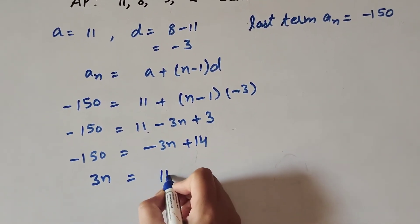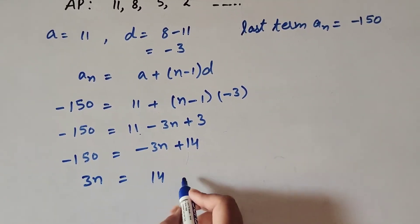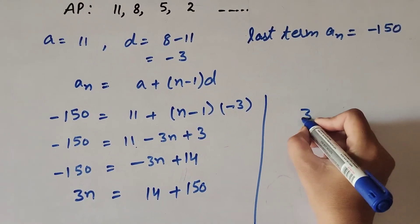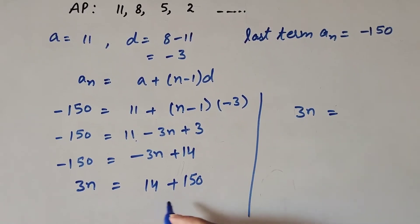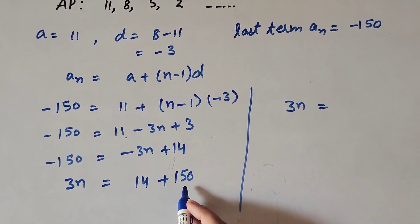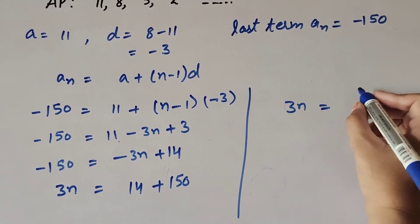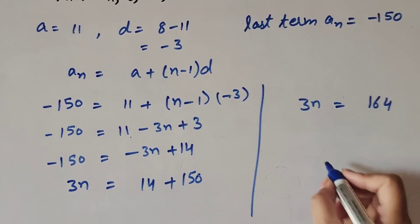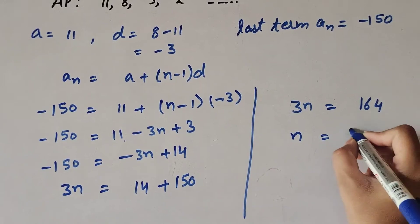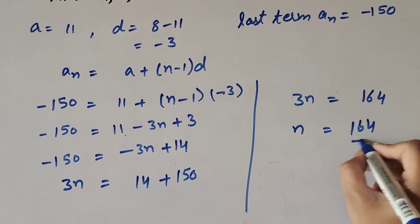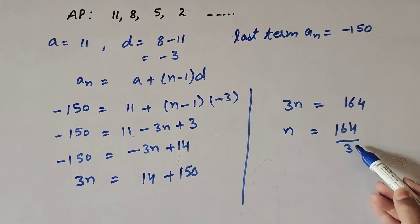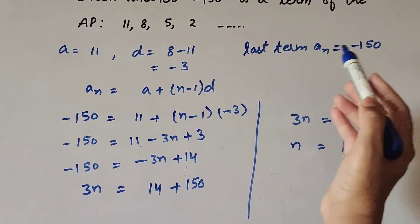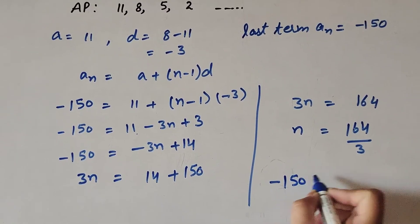So 3n = 164, and n = 164/3. Since 164 is not divisible by 3, the given term -150 is not a term of the AP.